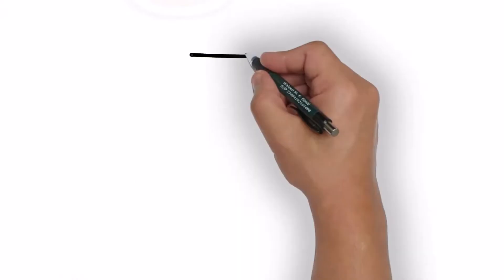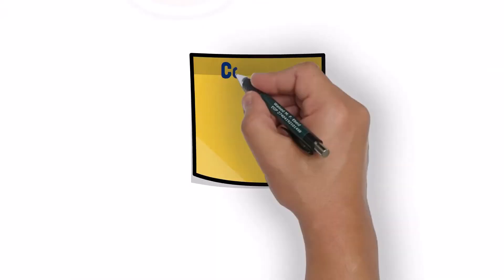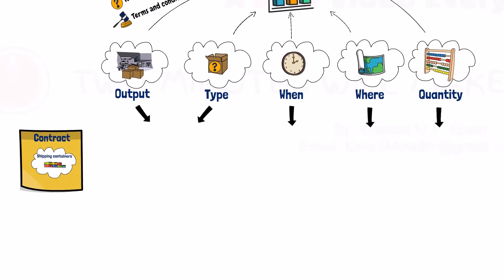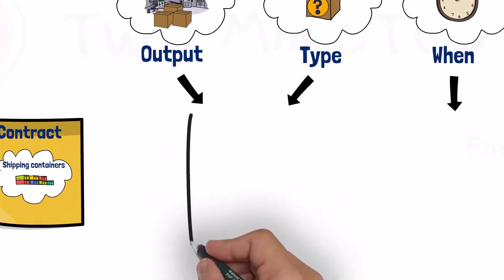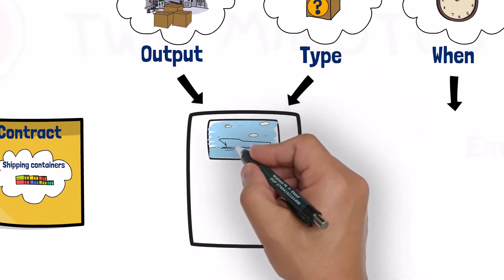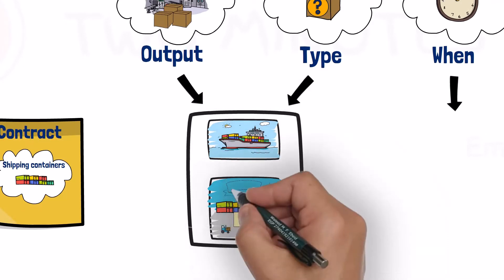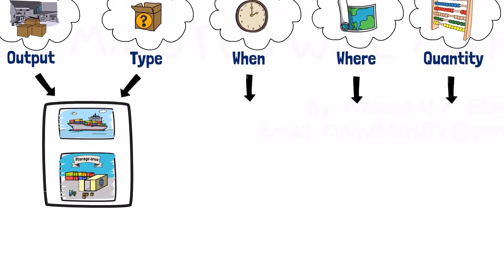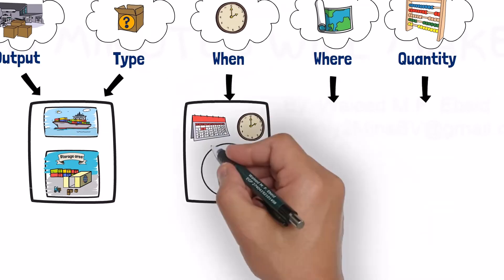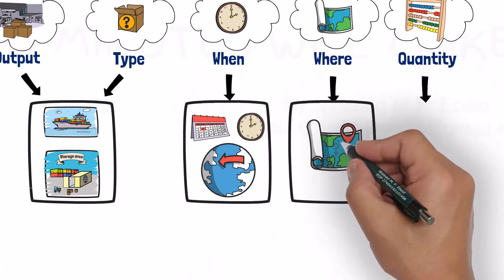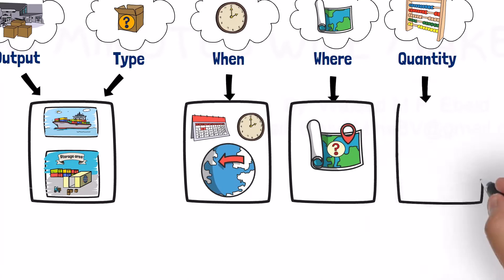For example, in a contract where the customer is granted the right to use shipping containers for transportation of its goods, the decisions might involve deciding whether to use a shipping container to transport goods or to use it for storage purposes, when to use the containers to ship the goods to their destination, and which destinations the goods will be shipped to.